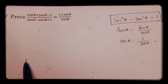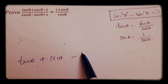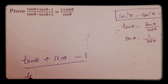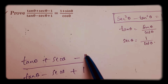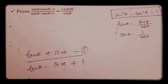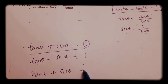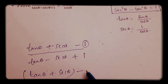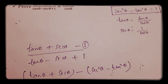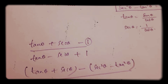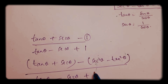So first step: write (tan θ + sec θ - 1) / (tan θ - sec θ + 1). In place of 1 in the numerator, I will write sec²θ - tan²θ, so the numerator becomes tan θ + sec θ - (sec²θ - tan²θ), with the denominator remaining as tan θ - sec θ + 1.